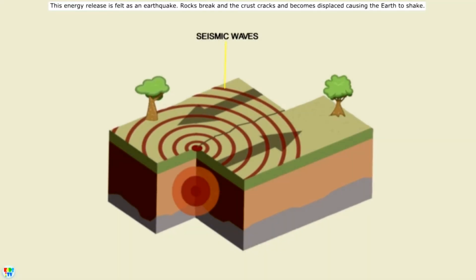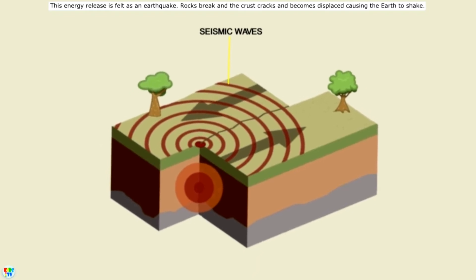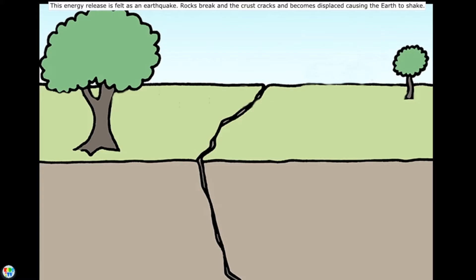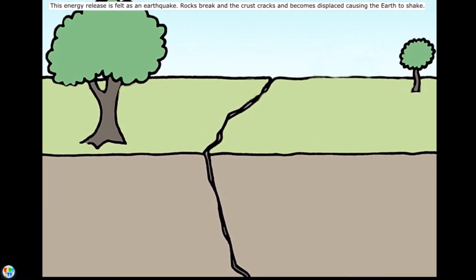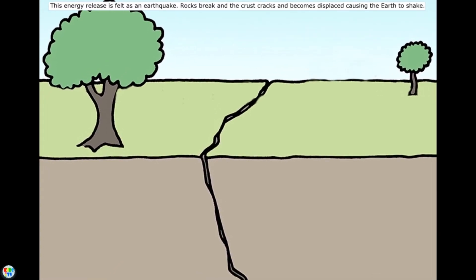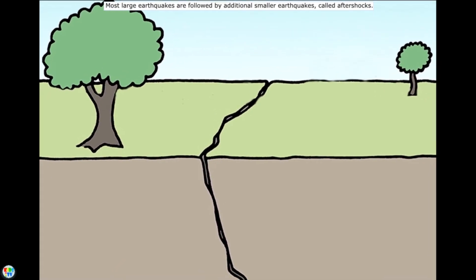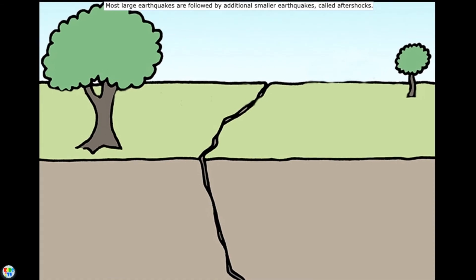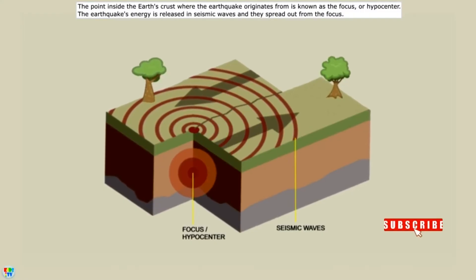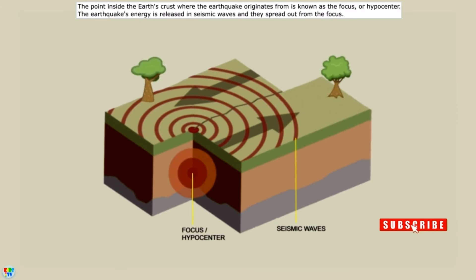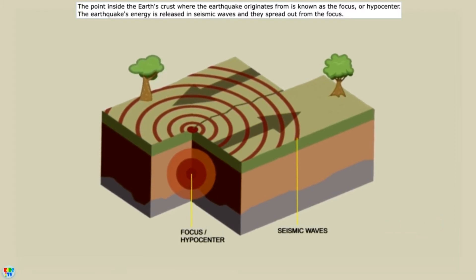This energy release is felt as an earthquake. Rocks break and the crust cracks and becomes displaced, causing the earth to shake. Most large earthquakes are followed by additional smaller earthquakes called aftershocks. The point inside the earth's crust where the earthquake originates from is known as the focus, or hypocenter.